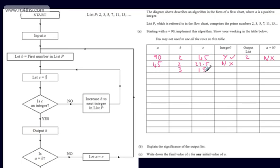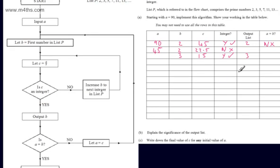Is C an integer? Yes, 15 is an integer. We output B — B is 3. Is A equal to B? A is 15 and B is 3, so the answer is no. We then let A be equal to C — A is now 15. We come back up, let B be equal to the first number in the list, which is 2. We find C which is A divided by B, giving 7.5.